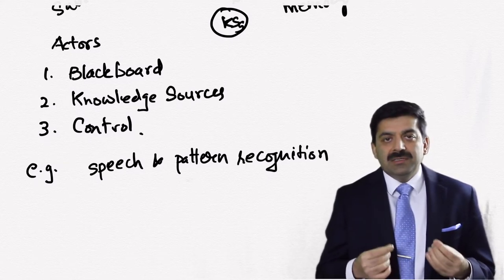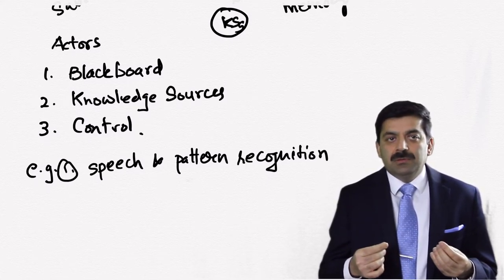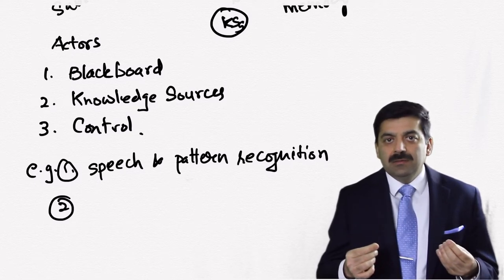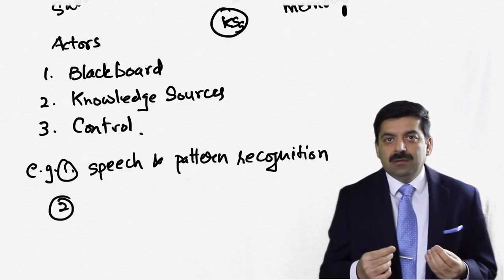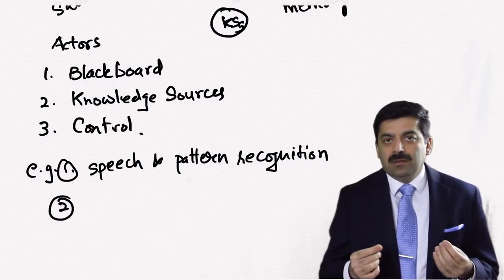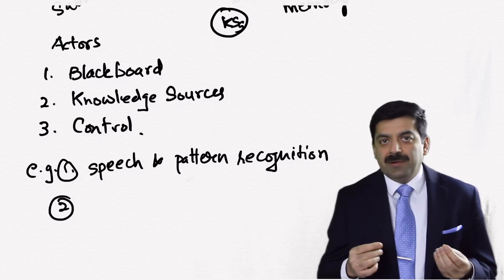Let's look into some examples. This blackboard repositories architecture style will make more sense if we look into examples. First example is it's used when you require very complex processing of signal, for example speech processing or pattern recognition.